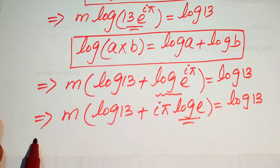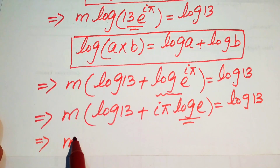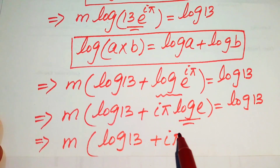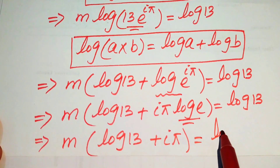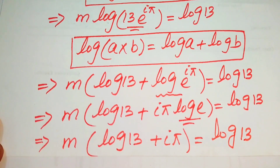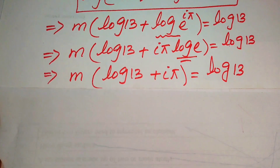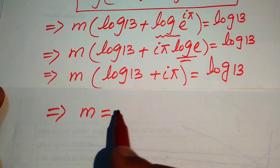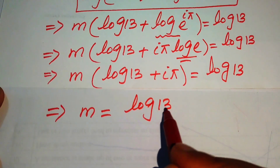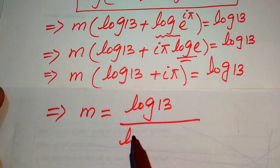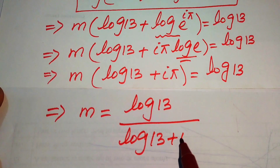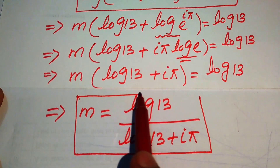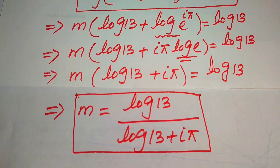Since log(e) = 1, the equation simplifies to m times [log(13) + iπ] = log(13). Moving terms to the right-hand side, we get m = log(13) / [log(13) + iπ]. This is the value of m from Method 1.